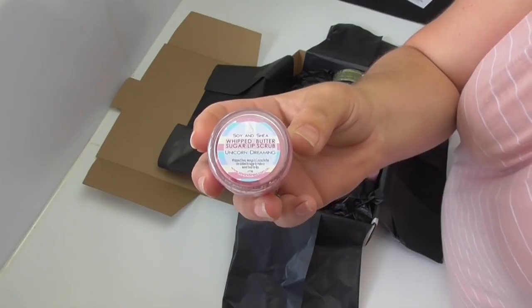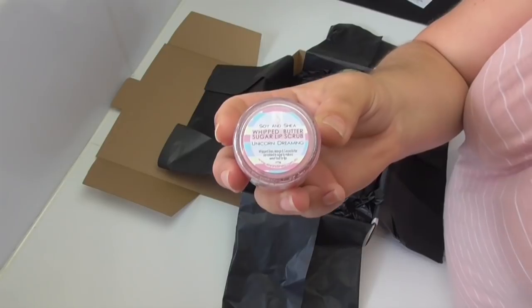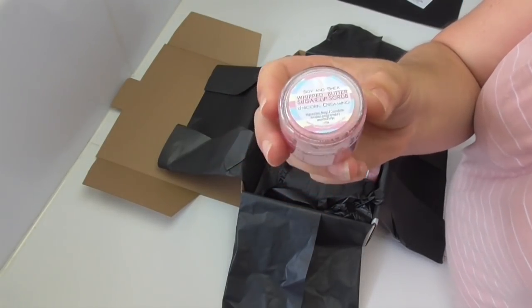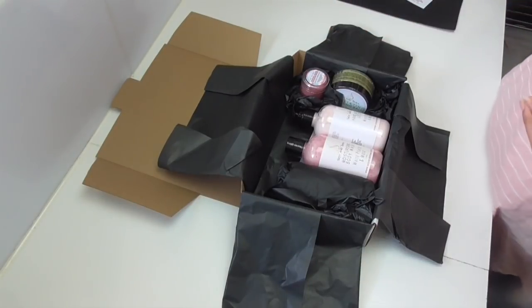So we're including some of our whipped butter sugar lip scrub in our new fragrance, Unicorn Dreaming, and this is really great for exfoliating any of that dry skin off the top of your lips, and all the oils and butters in it keep your lips nice and moisturized.